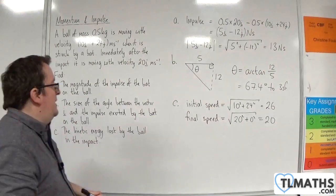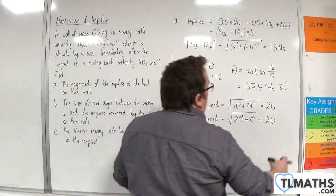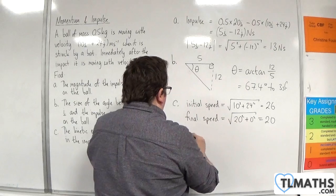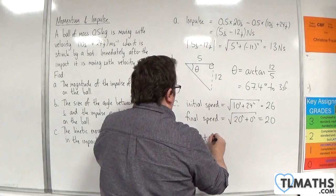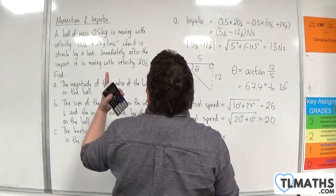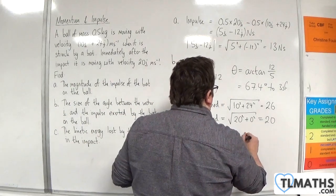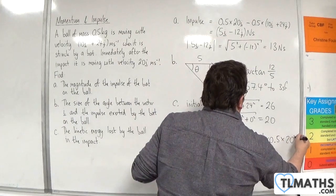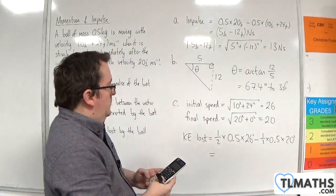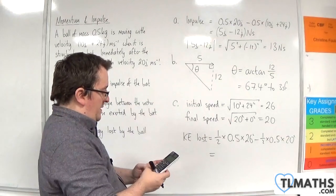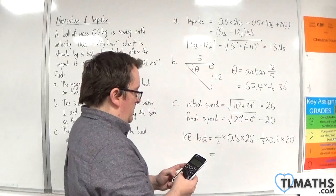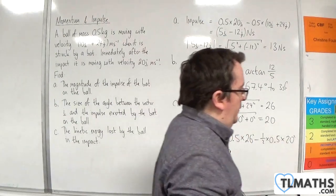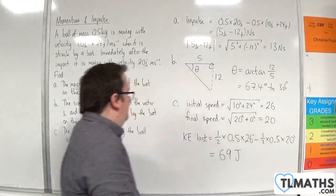So the kinetic energy lost is going to be the kinetic energy initially take away the kinetic energy final. So kinetic energy lost is going to be equal to 1 half times m, so 0.5, times by v squared. So 0.5 times 0.5 times 0.5 times, and then 26 squared, take away 20 squared. So a quick bit of factorising there. And we should get 69. And so that is joules.